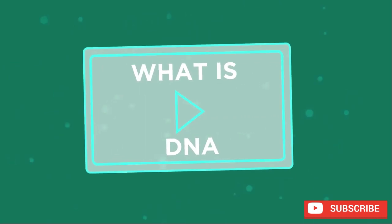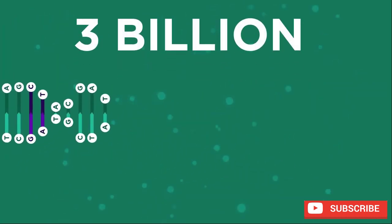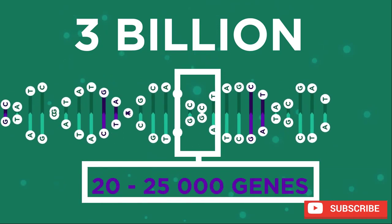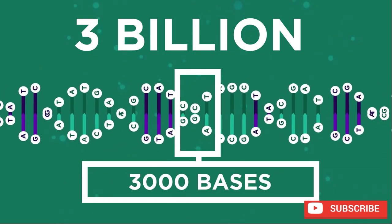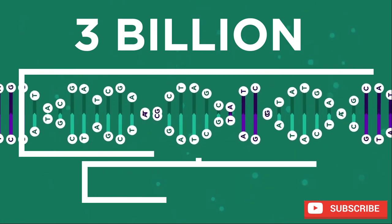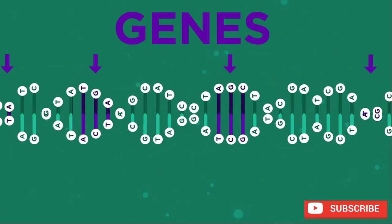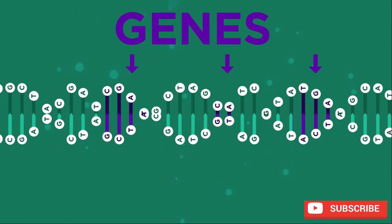The human genome is 3 billion bases long, but only consists of about 20 to 25,000 genes. As an average size gene is only about 3,000 bases long, this means that large parts of our DNA doesn't code for genes.